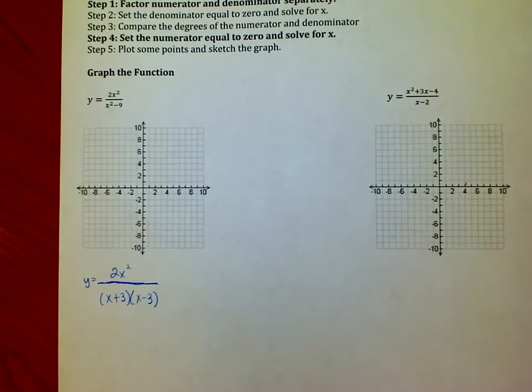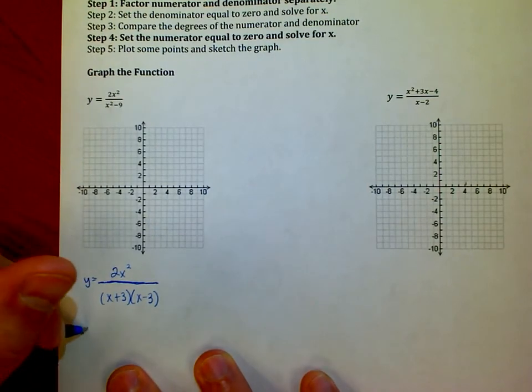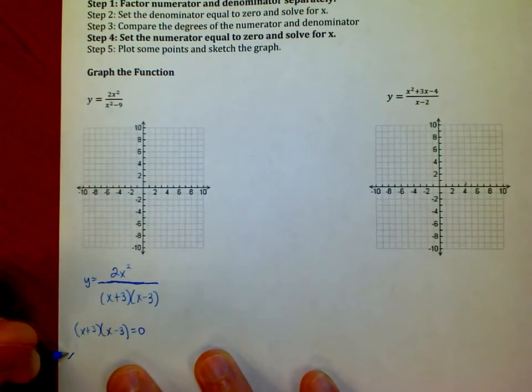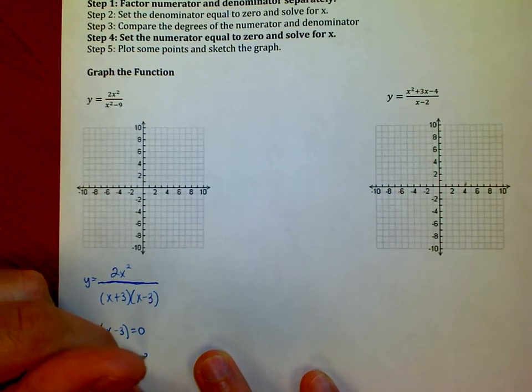Now that I've done this, I'm going to set the denominator equal to zero and solve it for x. If I have two pieces of information multiplied together to give me zero, that means either the first thing is zero or the second thing is zero.